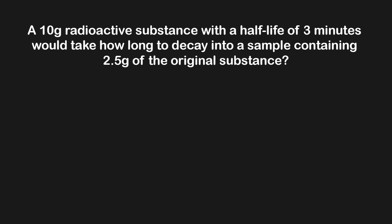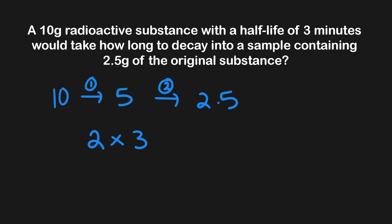Here's our first example. This question asks: a 10 gram radioactive substance with a half-life of three minutes would take how long to decay into a sample containing 2.5 grams of the original substance? Here we're not asked for the ending amount, but instead how long it took. We start with 10 grams and draw arrows, halving sequentially until we reach 2.5 grams. Counting the arrows, we have two half-lives. Since each half-life is three minutes, it takes six minutes total for this 10 gram sample to decay to 2.5 grams.